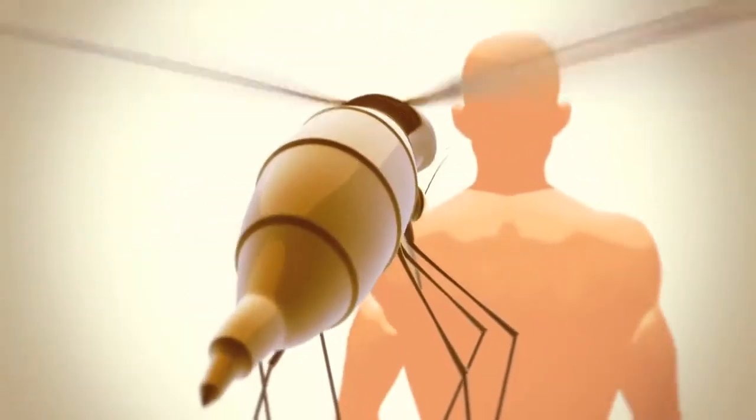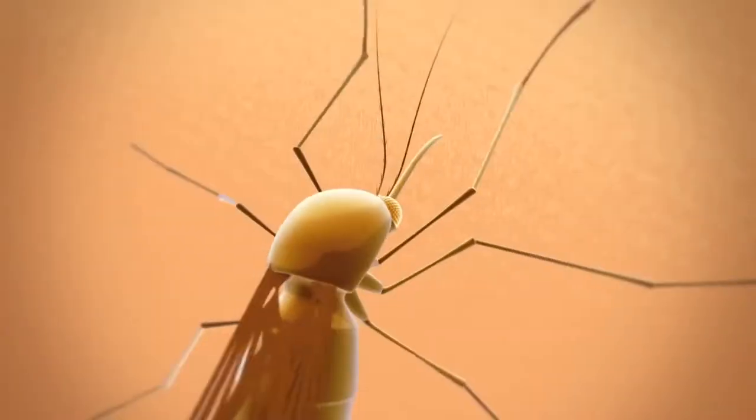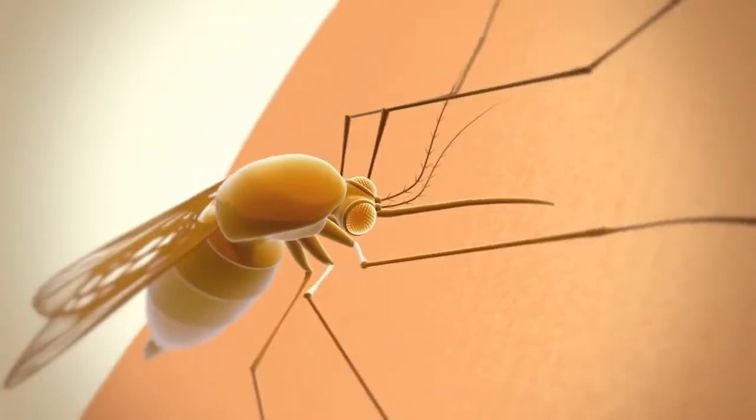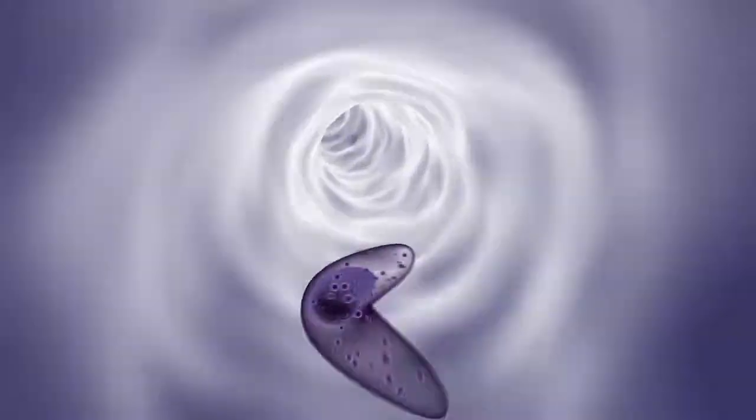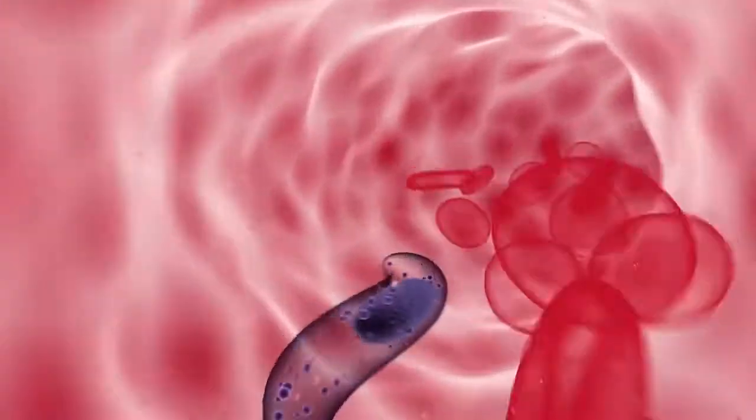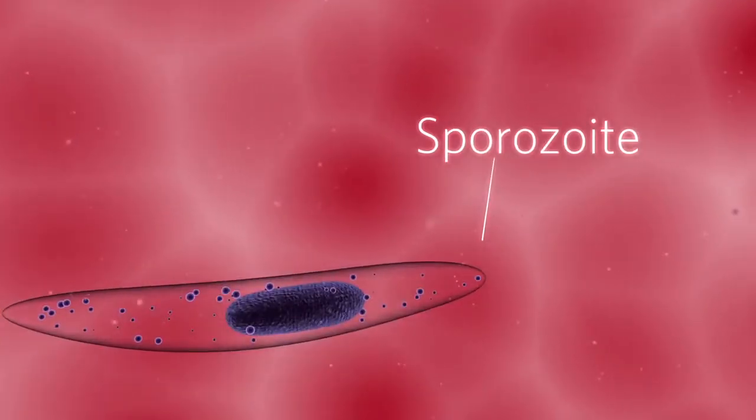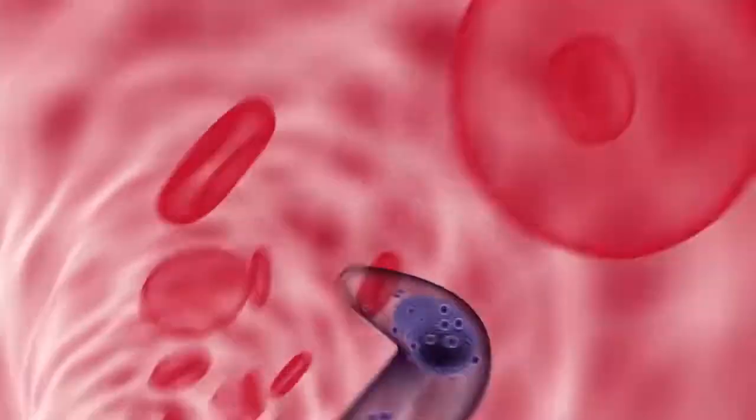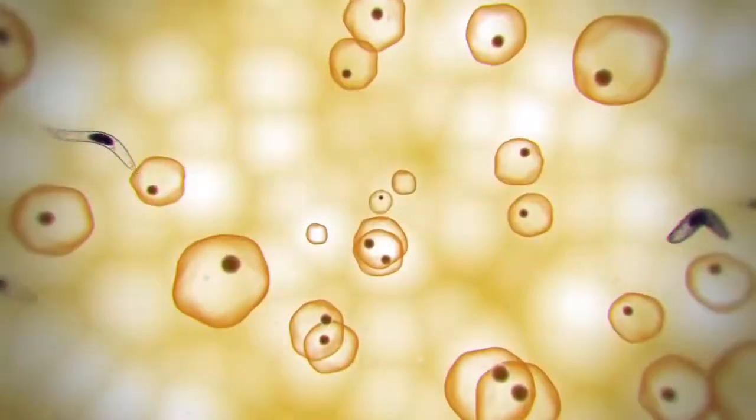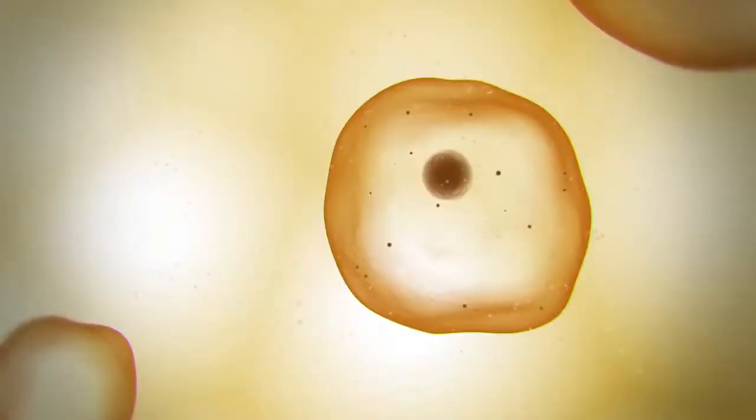The malaria parasite's life cycle is very complex, involving many stages. As the mosquito feeds, malaria sporozoites enter into the human bloodstream. They quickly make their way to the liver and infect liver cells, with the help of the circumsporozoite protein.